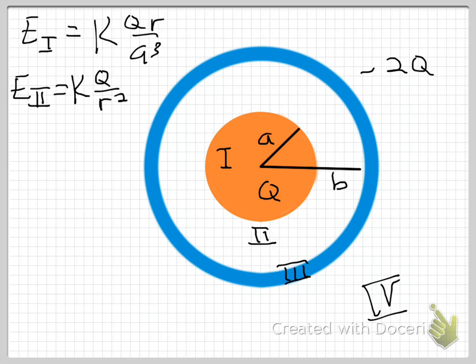Once you get outside of the insulating sphere, the field drops off as 1 over R squared, like we would expect. And this is all easily derived from Gauss's Law.